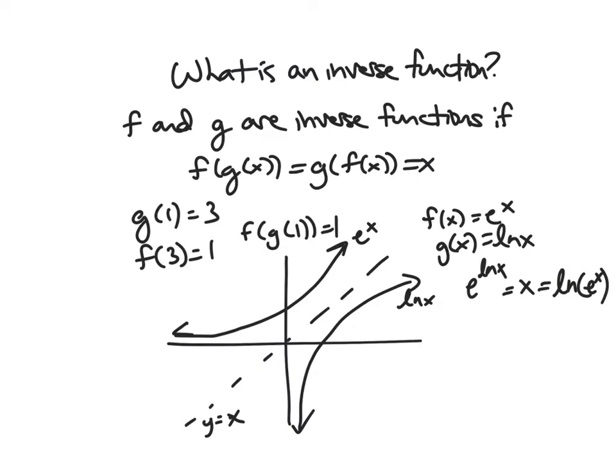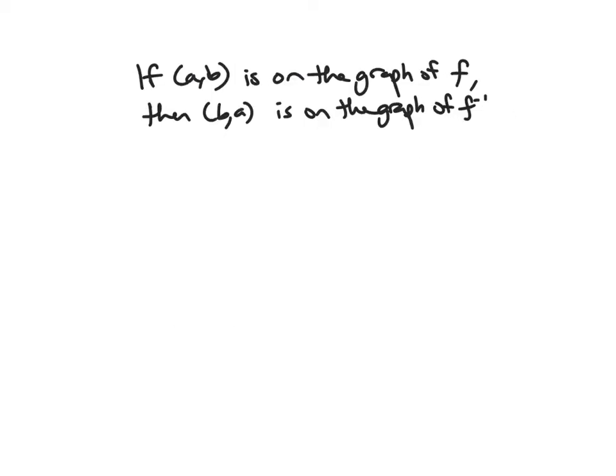And this is, in general, the property of inverse functions, that to get the inverse, you just reflect over this line. So basically, what we can take from that graphical interpretation is that if the point a, b is on the graph of f, i.e., if f of a equals b, then b, a is on the graph of f inverse. That is, f inverse of b is equal to a.